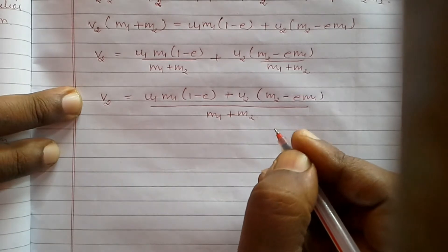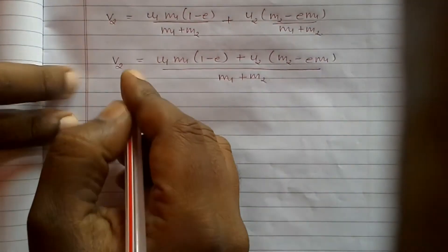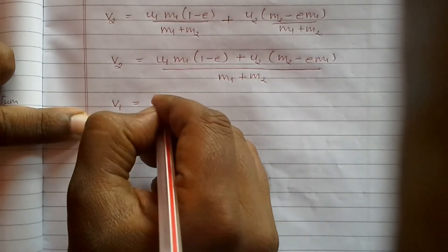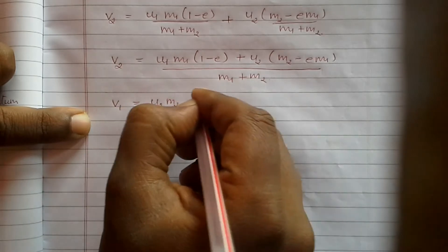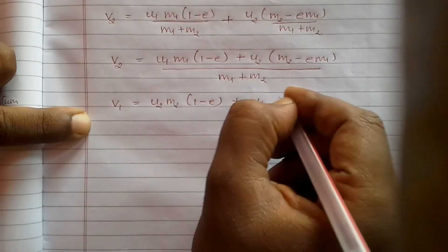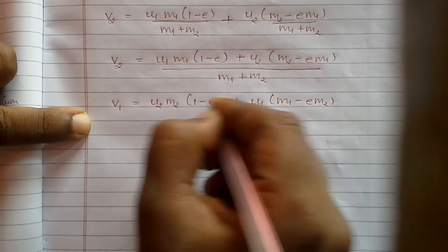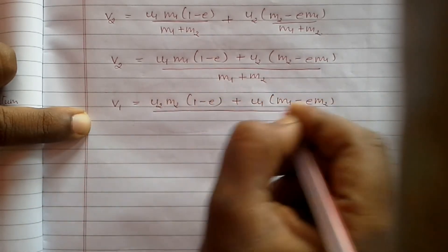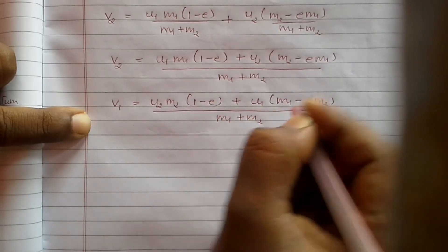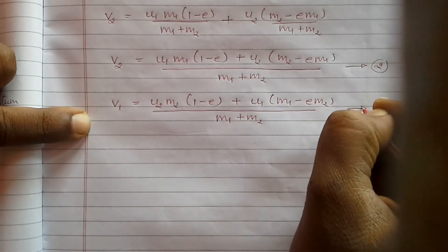Similarly, by the same method we can find the value for v1, and we simply write it as: v1 = [u2·m2·(1 + e) + u1·(m1 − e·m2)] / (m1 + m2). Let us call v2's expression equation 2 and v1's expression equation 3.